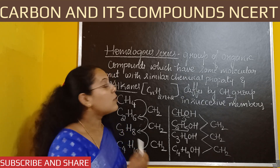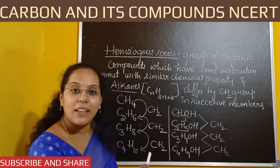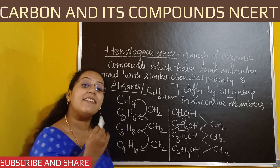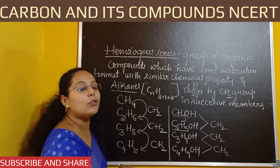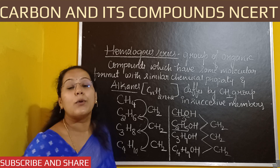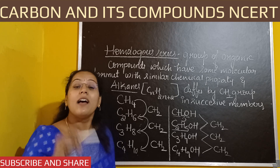Successive members differ by CH2 group — that is what you need to understand when it comes to homologous series. They all have similar chemical properties because they all belong to the alcohol group.